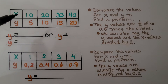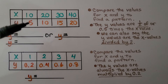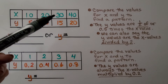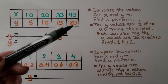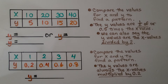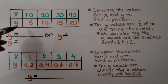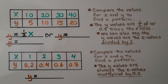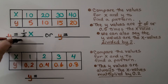Here's another table. We compare the x and y values and find a pattern. x is 10 and y is 5 — that's half of x. x is 20 and y is 10 — again half. We have 30 and 15, still half. And 40 and 20, still half. The y values are half — or 0.5 times — the x values. So y is equal to one-half x, which we can also write as y equals 0.5x.